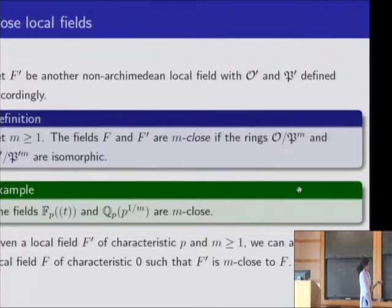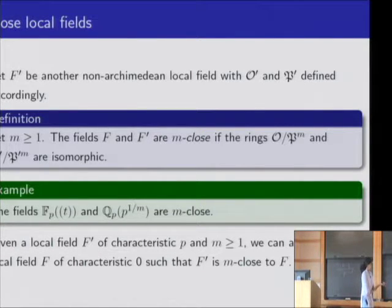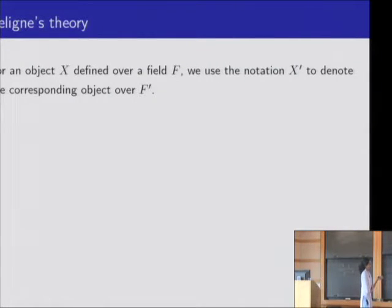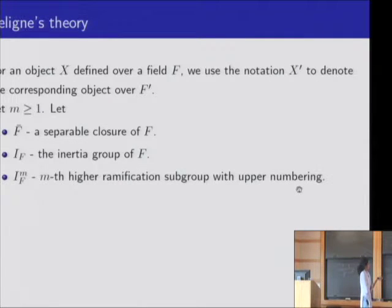There are two important results that study the representation theory over close local fields: representation theory of Galois groups over close fields and also of reductive algebraic groups. The first one is due to Deligne. If X is an object we are working over a field F, then X prime will denote the corresponding object over F prime. We fix a separable closure; I_F is the inertia group and I_F^M is the M-th higher ramification subgroup with the upper numbering.